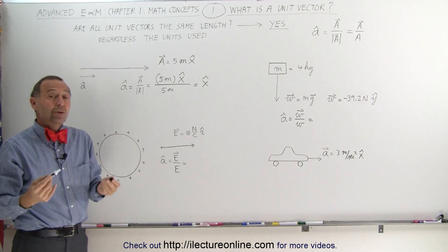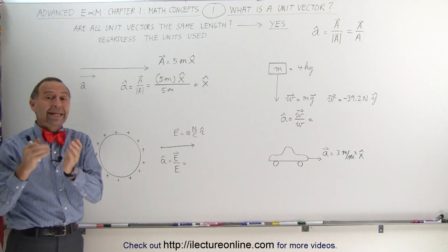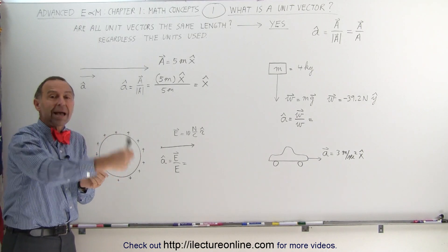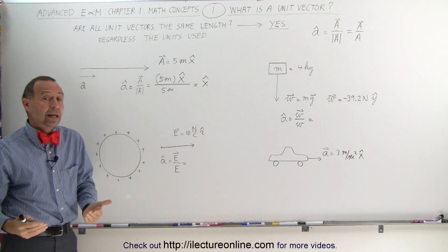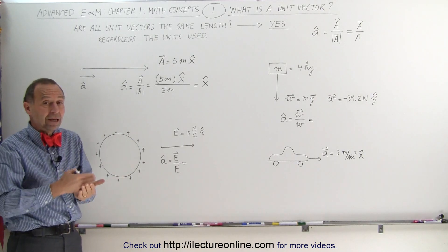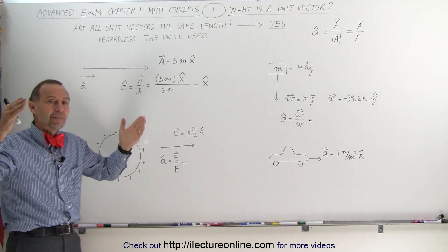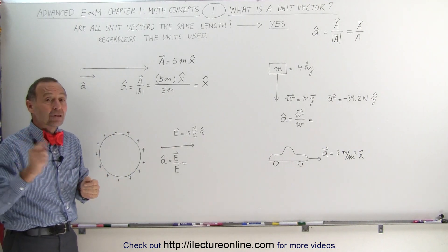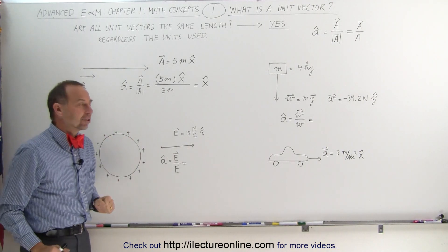What does that really mean, and why do we need it? Whenever we multiply anything by a unit vector, it doesn't change the magnitude of what we're multiplying. If we multiply vector B by the unit vector, we still get the magnitude of vector B, and we have the direction of the unit vector.